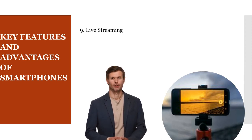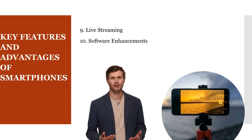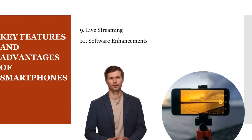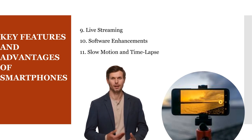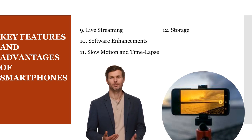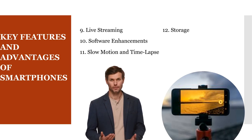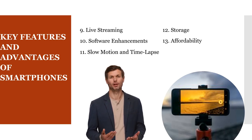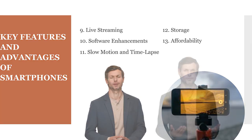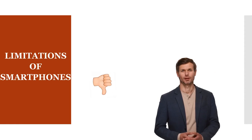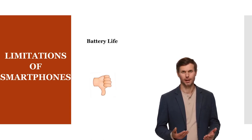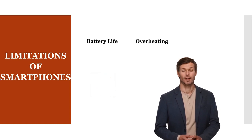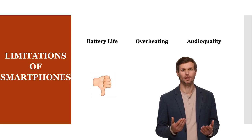Smartphones often come with AI-based features that enhance video quality, such as HDR (high dynamic range), AI-driven stabilization, and night mode for better low-light performance. Smartphone cameras typically offer slow-motion and time-lapse recording modes, allowing you to capture creative and dynamic shots. While smartphone storage can be a limitation, cloud storage services and memory expansion options via microSD cards are available on some devices. The cost of using a smartphone for video recording is often significantly lower than purchasing dedicated equipment. Limitations include limited battery life during extended recording sessions, potential overheating, and limitations in advanced audio quality, although external microphones can mitigate this.